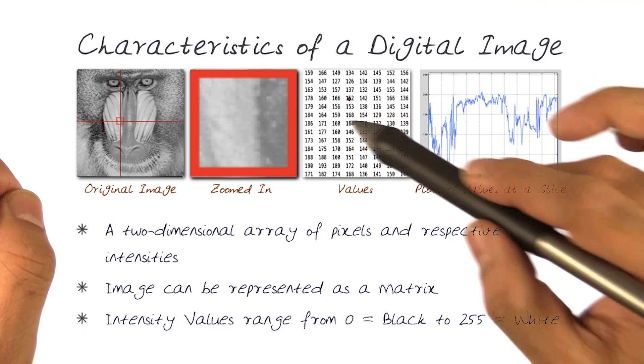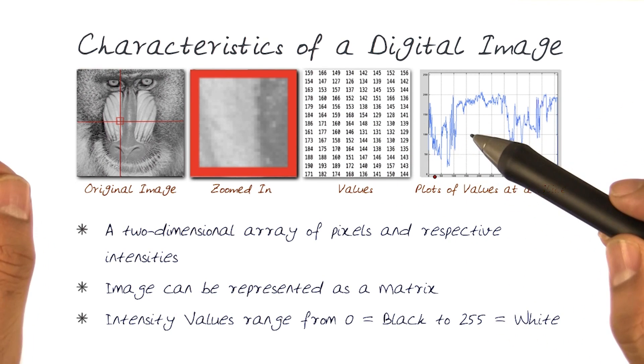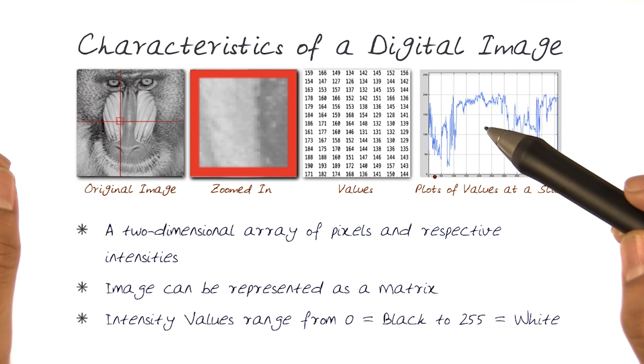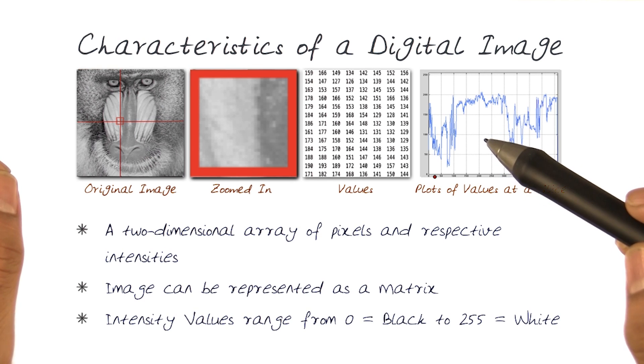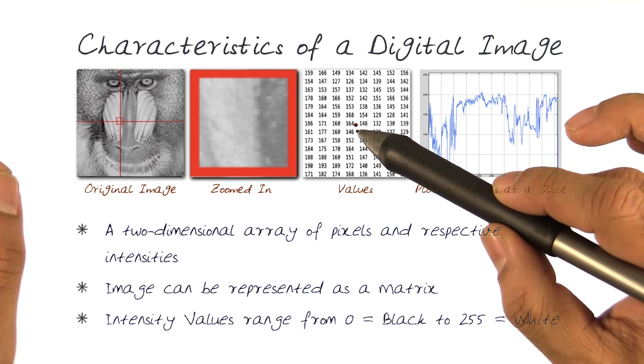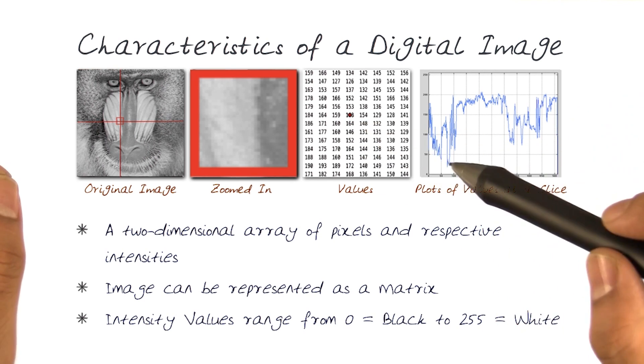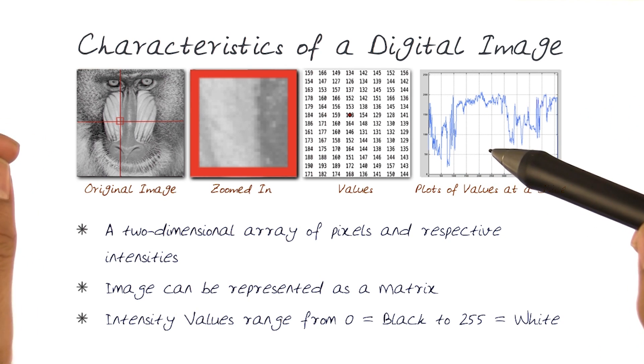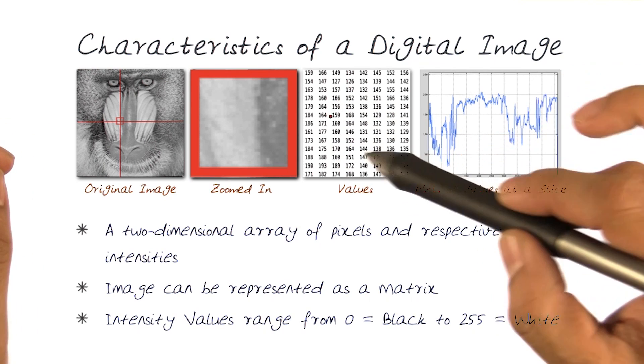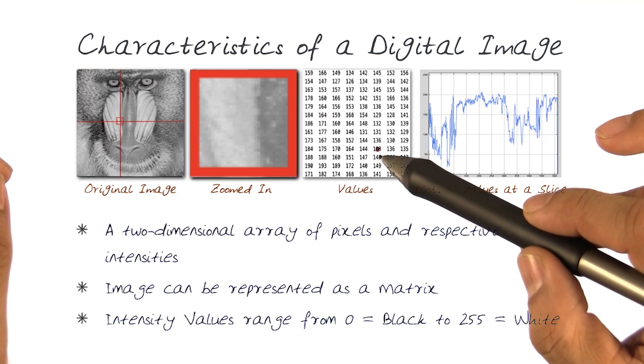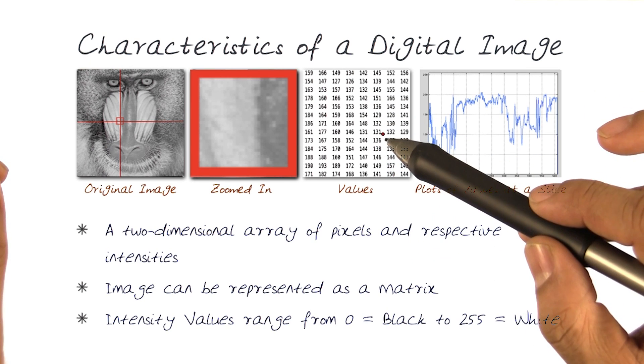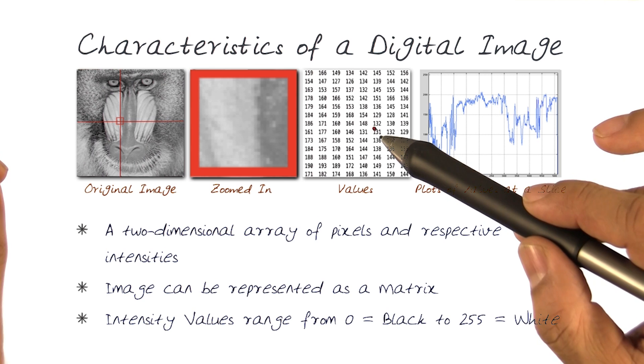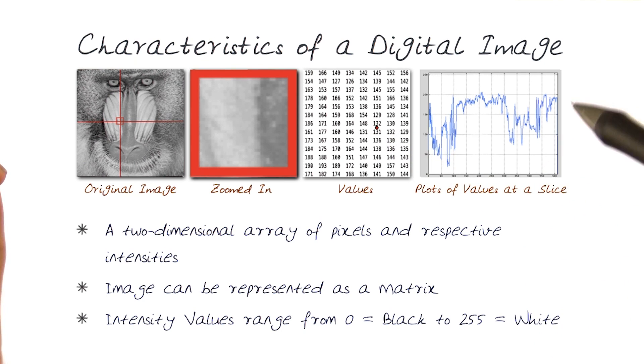This should start suggesting, especially looking at this, that this is a two-dimensional representation where each and every point is basically a pixel which has its own intensity value. So the best way to represent this would be a matrix. This already looks like a matrix. It's a two-dimensional array and each and every element of this matrix is a pixel, and the value of that is basically the intensity value there. So an image can be represented as a matrix.